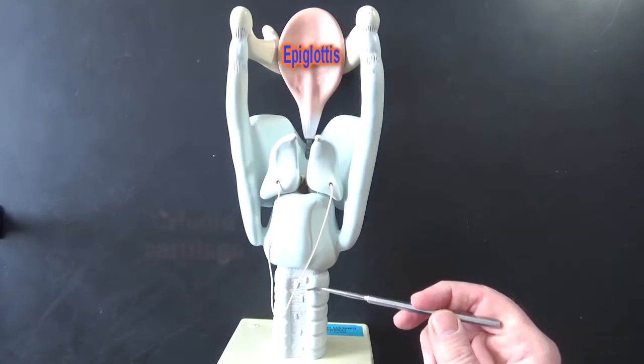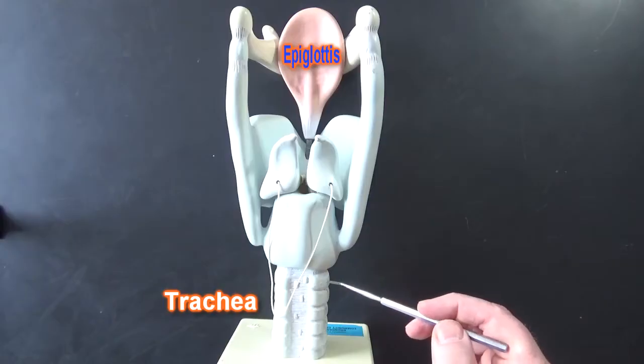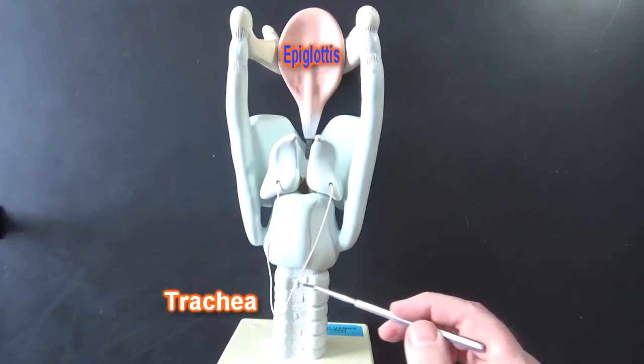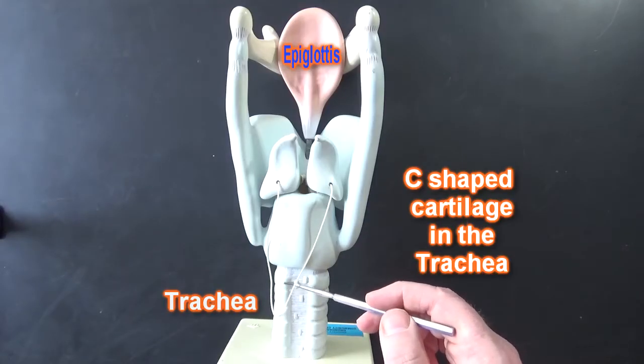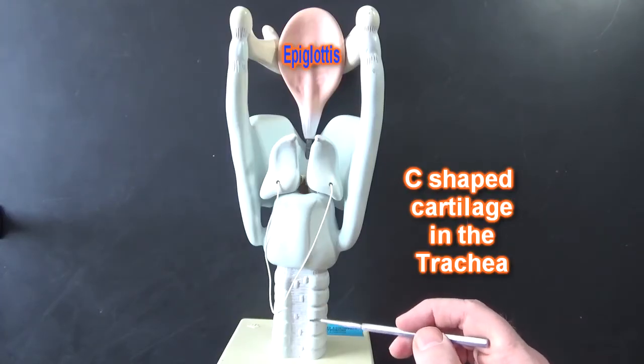Here we can see the trachea down here and notice we've got this void here where the cartilage rings are not complete. They're actually c-shaped cartilage rings in the trachea.